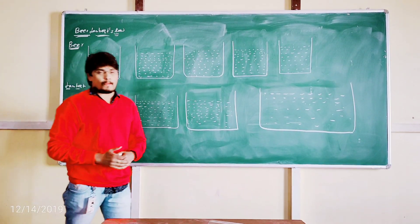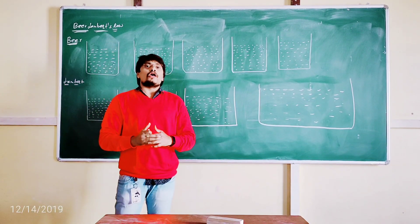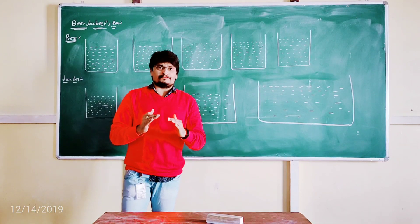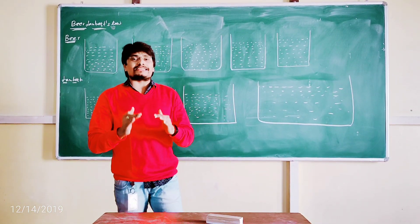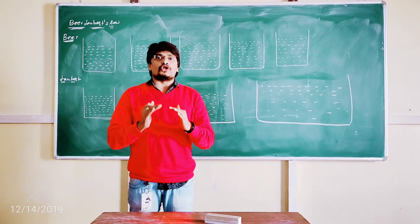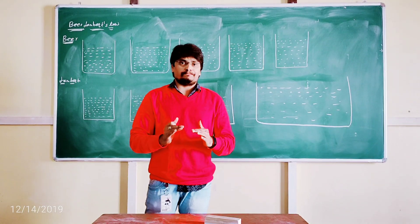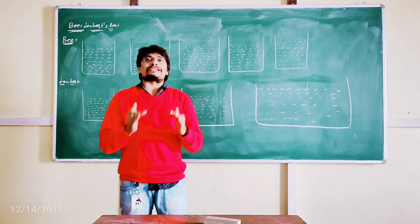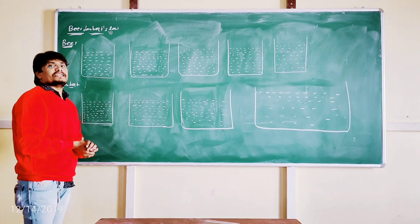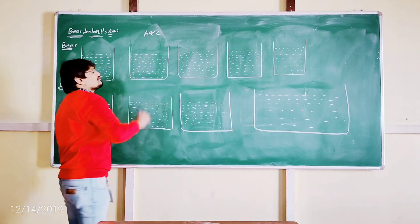First, let us discuss what is Beer's Law. Beer's Law states that whenever a beam of monochromatic light is passed through a sample, the absorption of the light is directly proportional to the concentration of the solute present in the solution. That is, absorbance is directly proportional to concentration.